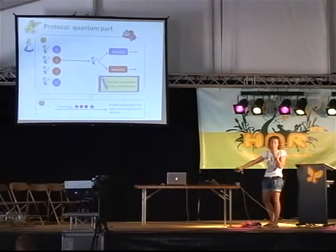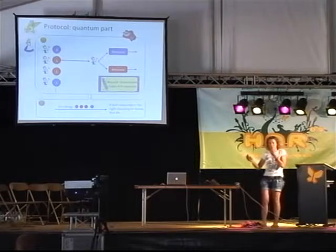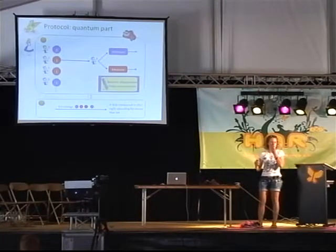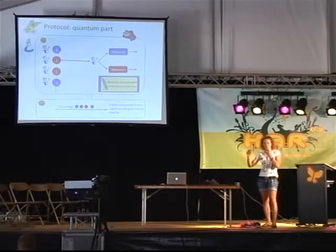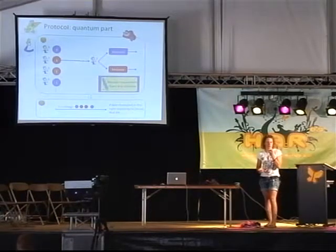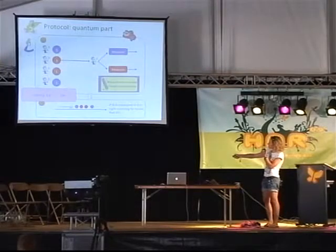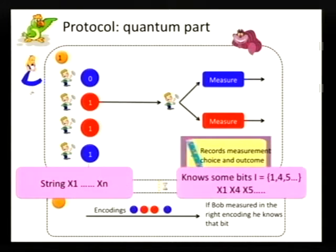If Alice encoded in blue and Bob happened to measure blue, he retrieves the bit; otherwise he gets something random. So Bob knows some of the bits — namely the ones where by accident he chose the same encoding. Because Alice tells him the encodings, he can write down which rounds he had chosen the same encoding, and these are the bits that he knows. The output is a string x1 up to xn, and a set of indices where Bob measured in the same color, say positions one, four and five, along with the bit values from those rounds.